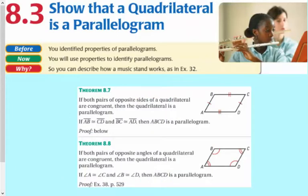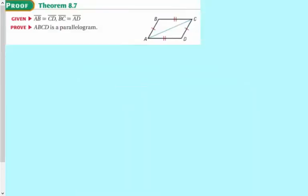So let's show that quadrilaterals are parallelograms today. Basically a lot of it is like yesterday. If the opposite sides of the quadrilateral are congruent, then it's a parallelogram. If both pairs of opposite angles are congruent, then the quadrilateral is a parallelogram. So they're almost like the converses.